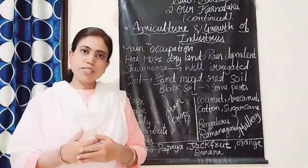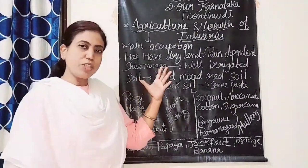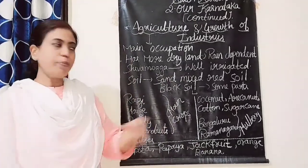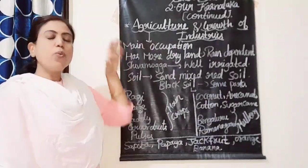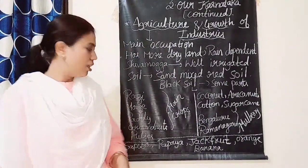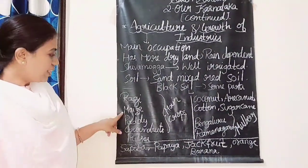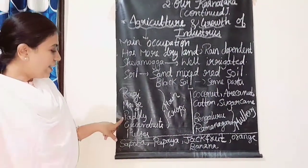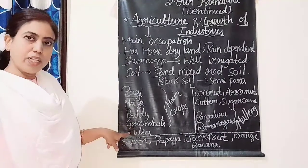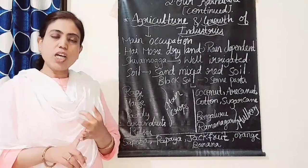The main crops grown in this division — since most people are dependent on agriculture — are ragi, maize, paddy, groundnuts, and pulses such as Bengal gram and urad dal.